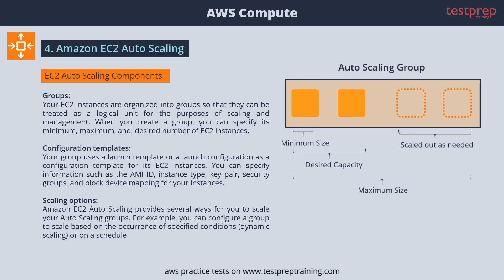Three: Scaling Options. Amazon EC2 Auto Scaling provides several ways for you to scale your auto scaling groups. For example, you can configure a group to scale based on the occurrence of specified conditions or on a schedule.